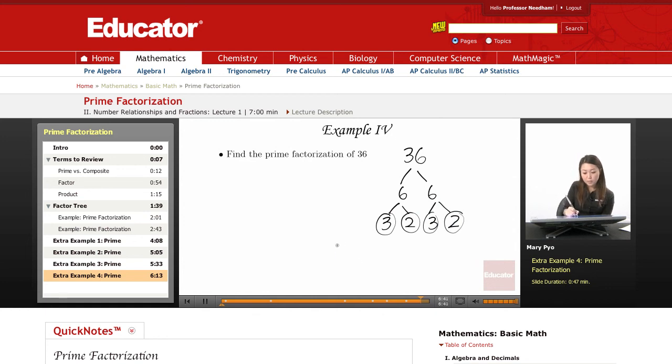So, 36 becomes 3 times 3 times 2 times 2. So, this is the same thing as 3 squared times 2 squared.